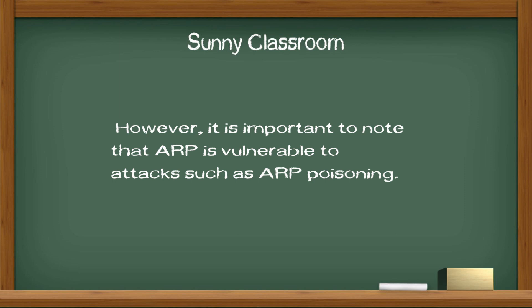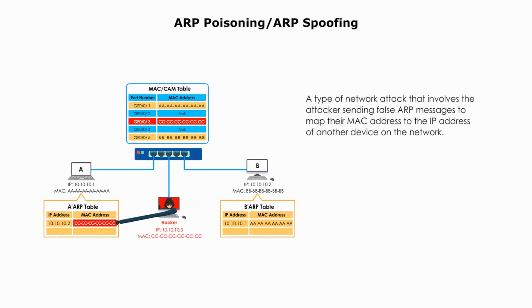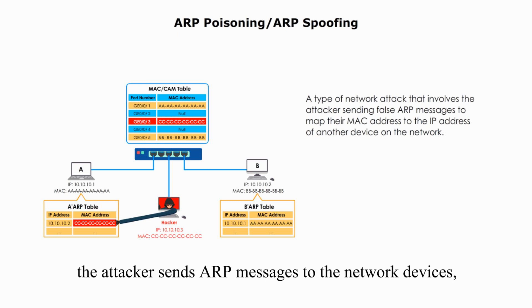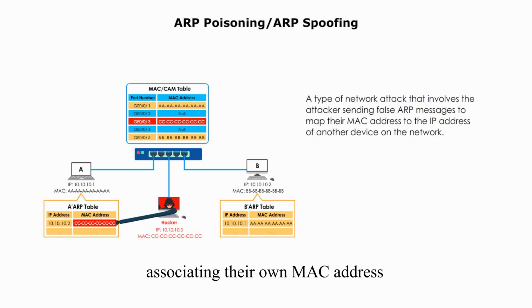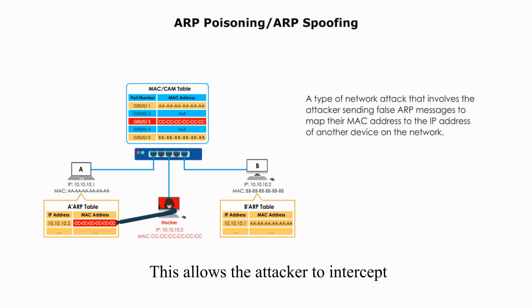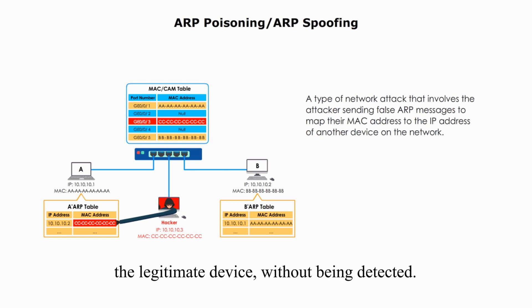However, it is important to note that ARP is vulnerable to attacks such as ARP poisoning. ARP poisoning is also known as ARP spoofing or ARP cache spoofing. It is a type of network attack where the attacker sends false ARP messages to map their MAC address to the IP address of another device on the network. This allows the attacker to intercept and modify network traffic intended for the legitimate device without being detected.